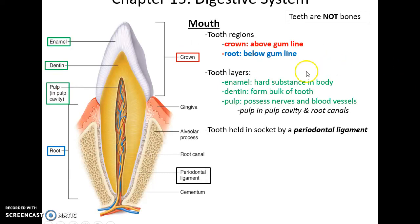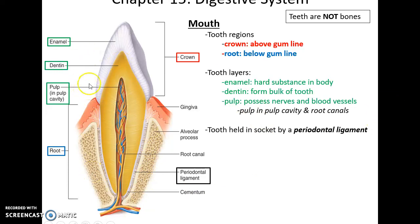If you look at a tooth, the top region above the gum line is the crown of the tooth. The lower region that goes into the bone is the root, which is attached to the surrounding bone by the periodontal ligament. Looking at the layers: the outermost layer is the enamel — the hardest substance our body produces. Under that is the dentin, which makes up the bulk of the tooth. And then there is the pulp, the really sensitive portion containing blood vessels and nerves.